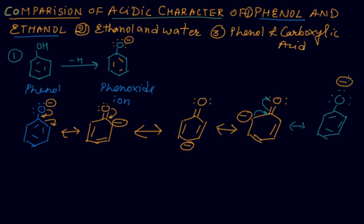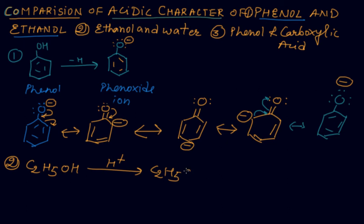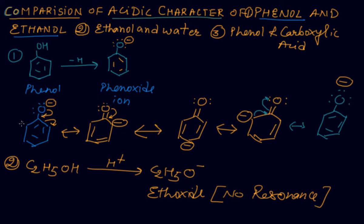This question has been asked many times. When we take ethanol (C₂H₅OH), it releases hydrogen and we get C₂H₅O⁻, known as the ethoxide ion. In the ethoxide ion there is no resonance — no resonance at all.